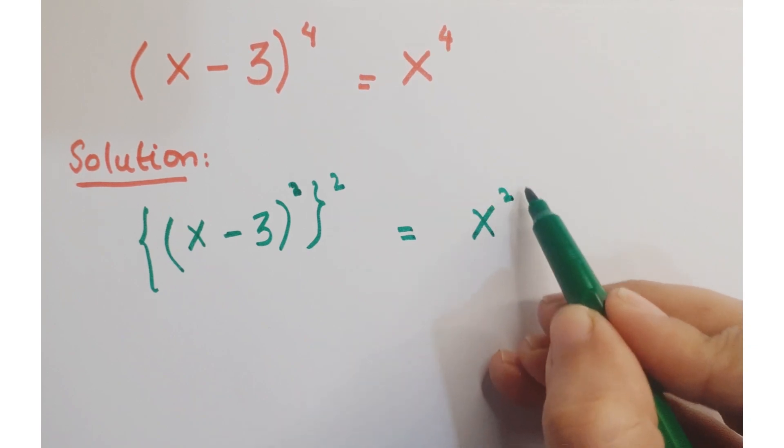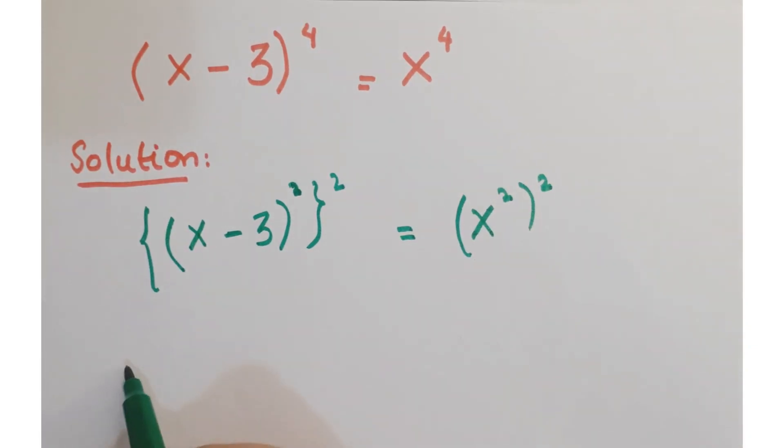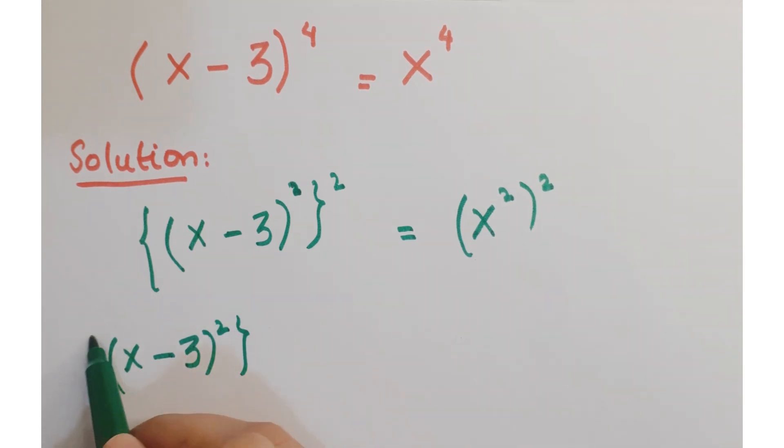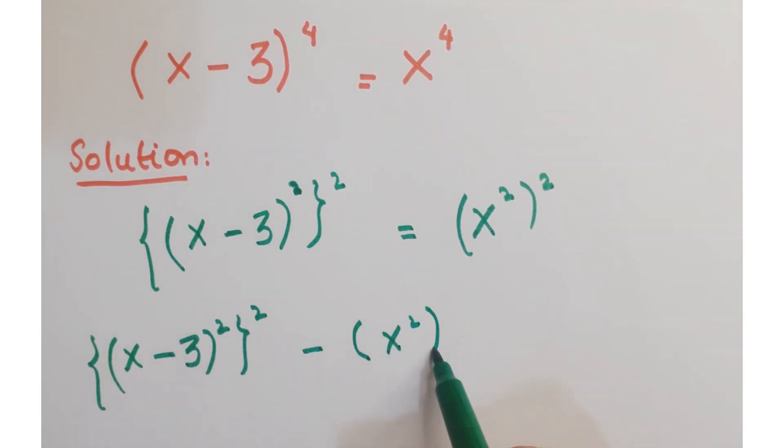And this x power 4 can be written as x square whole square. Now bring this x square whole square on the left hand side.